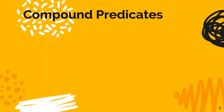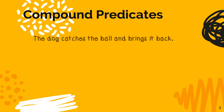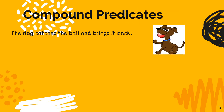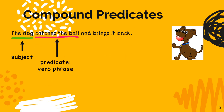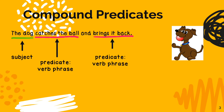A sentence has a compound predicate when there are two or more verbs or verb phrases in the sentence. For example, in the sentence 'The dog catches a ball and brings it back' — the dog is the subject. 'Catches the ball' is the predicate, and 'brings it back' is also a predicate or verb phrase. Since this sentence has two verbs or verb phrases, it is an example of a sentence with a compound predicate.